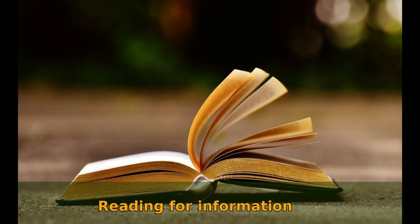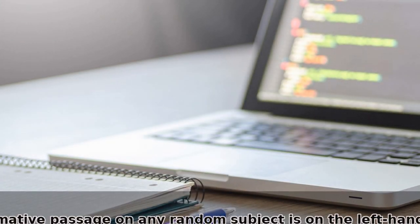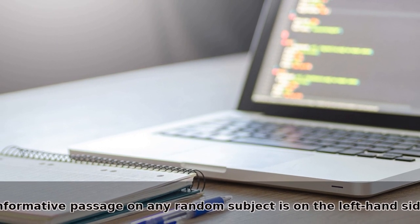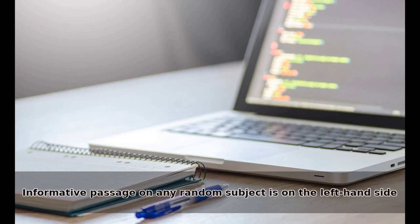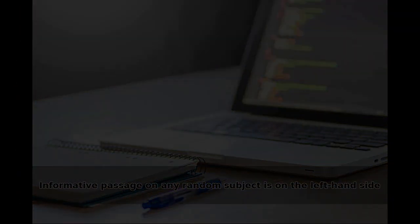Reading part three is reading for information. In this part, informative passage on any random subject is on the left hand side and there are around three to four paragraphs which are named as A, B, C, and D. The information is provided in these passages.